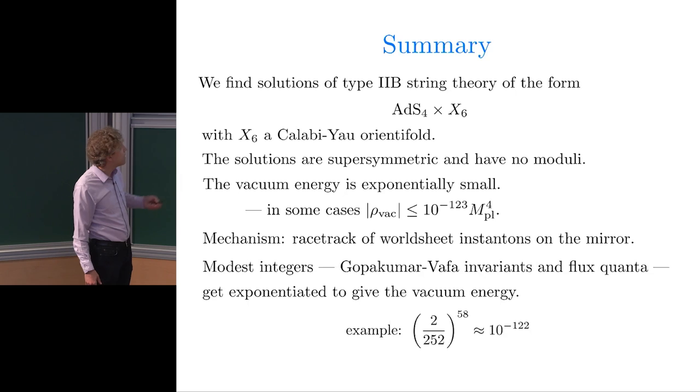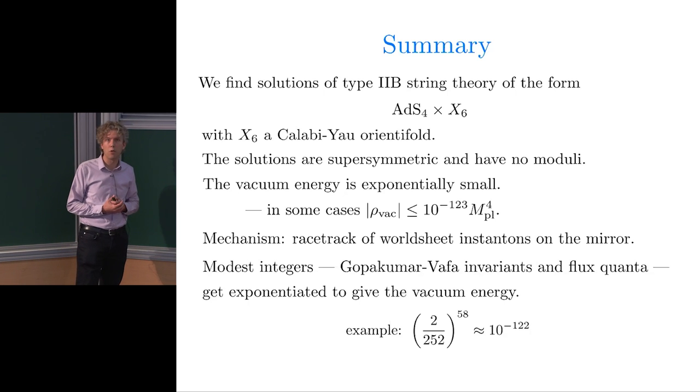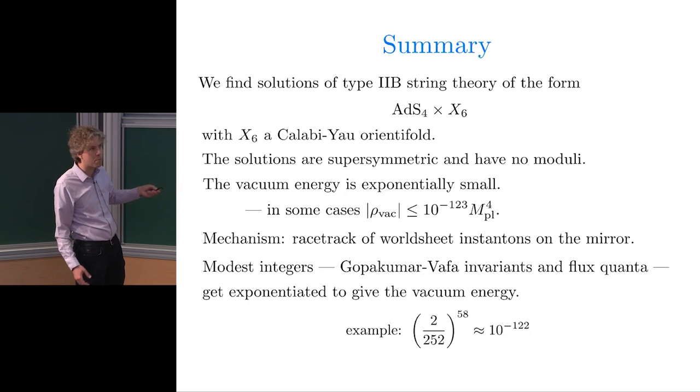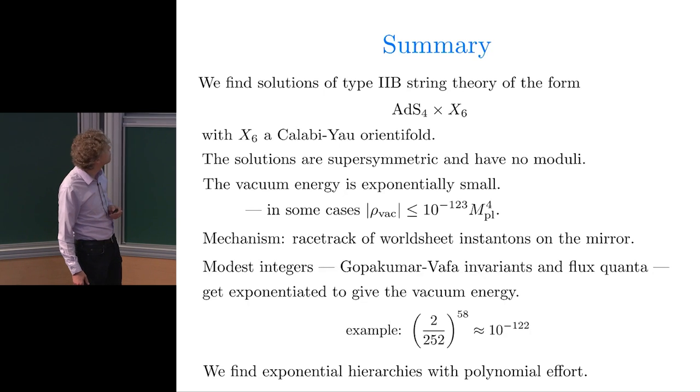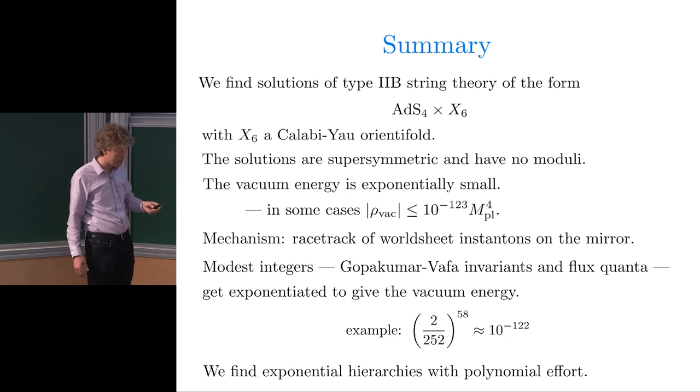As an example, these numbers are not made-up numbers. I'll find 2, 252, and 58 in an explicit example. Their ratio, so 2 over 252 to the 58, is about 10 to the minus 122. That's the kind of equation at the heart of this. The work is to show that you can actually get these numbers in this arrangement in a solution of string theory. In an EFT this is a very easy thing to write down, but it's sort of an absurd thing to write down. This allows us to find exponential hierarchies with polynomial effort. I'll only have to work polynomially hard to get these kinds of numbers, and then I get something like that.